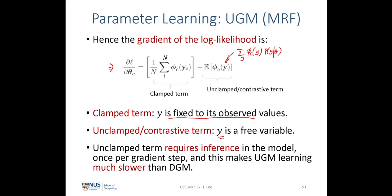We need to resort to a gradient descent method for this optimization. Every gradient step requires a marginalization over all the random variables of Y, which is an inference step over all the random variables. Hence, learning the undirected graphical model of MRF is much slower than the directed graphical model.